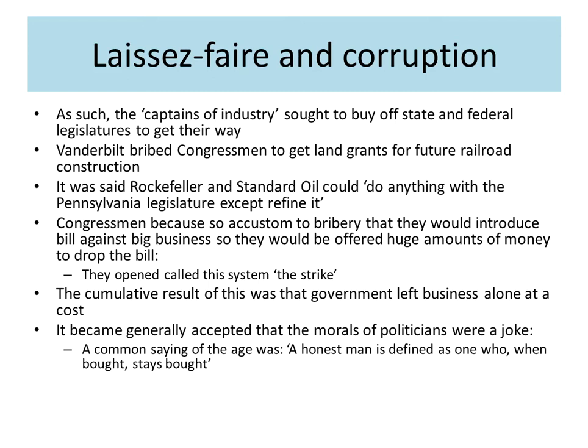All of this added together meant that no one on the state or federal level really wanted to get involved with government regulation, and those who did very quickly had bribe money given to them to stop. If they really didn't stop, money was poured into the opposition at the next election so that the opposition would win and probably do what they were told. The image and morals of politicians really became a joke in this period. The common saying was: 'An honest man is defined as one who, when bought — meaning bribed — stays bought.' That really covers this period, which is a really interesting time in history, but only if you like human weakness and fallibility.